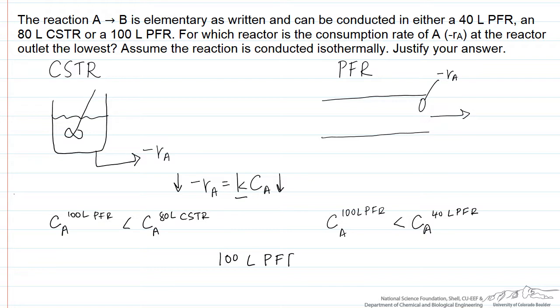Therefore we're able to achieve a lower concentration of A inside the 100 liter PFR than either of the other reactors, and so this is going to be the lowest value. Therefore the reaction rate will have the lowest value for a 100 liter PFR.